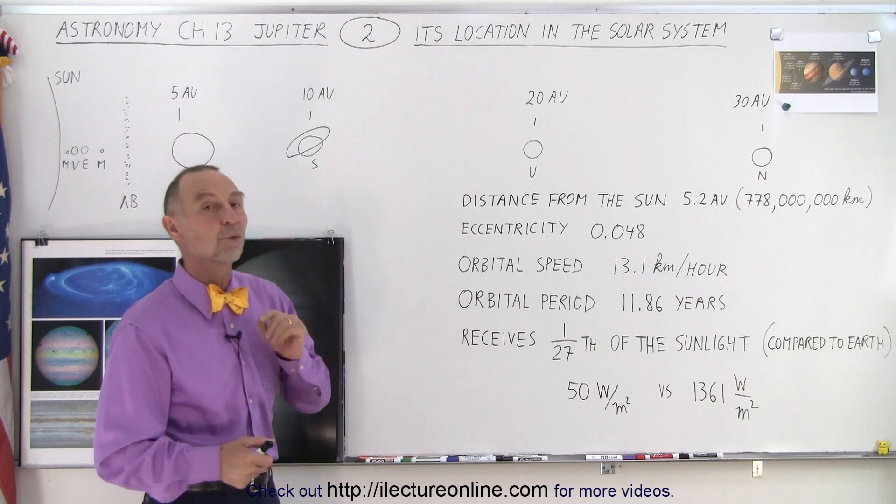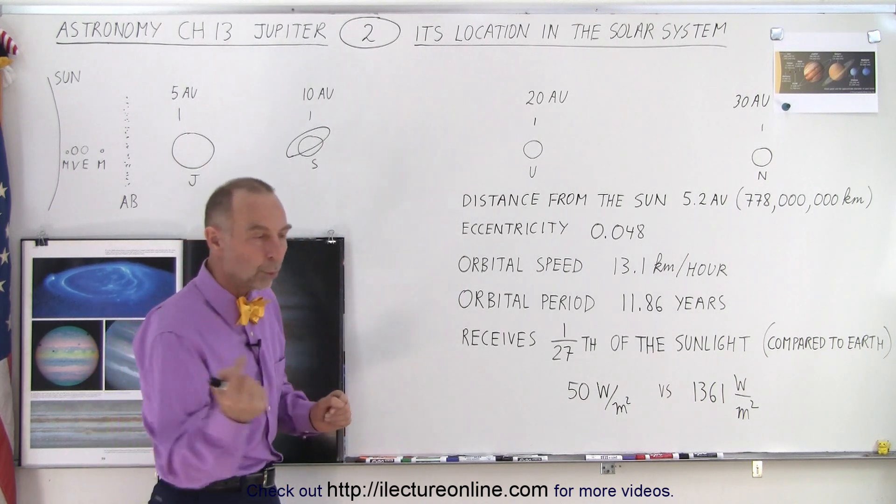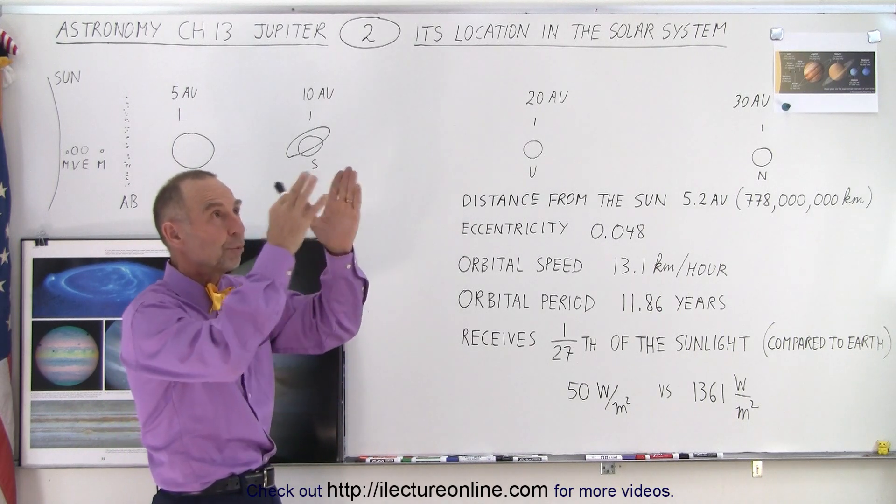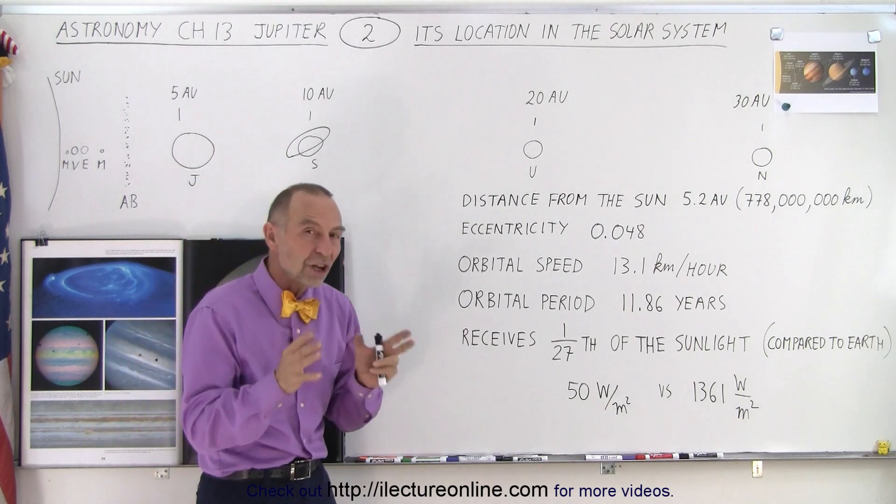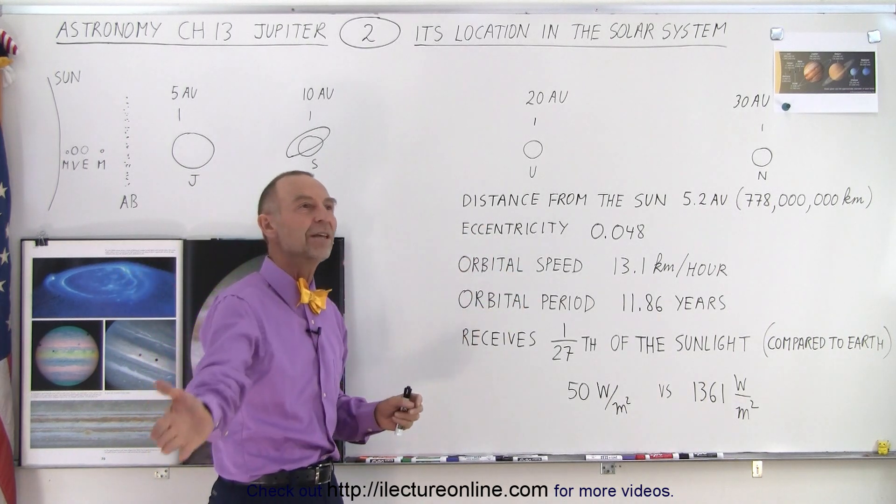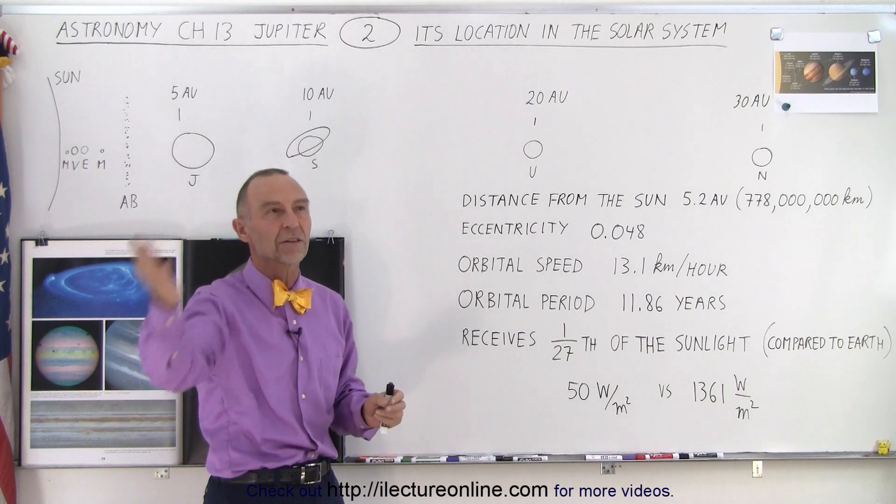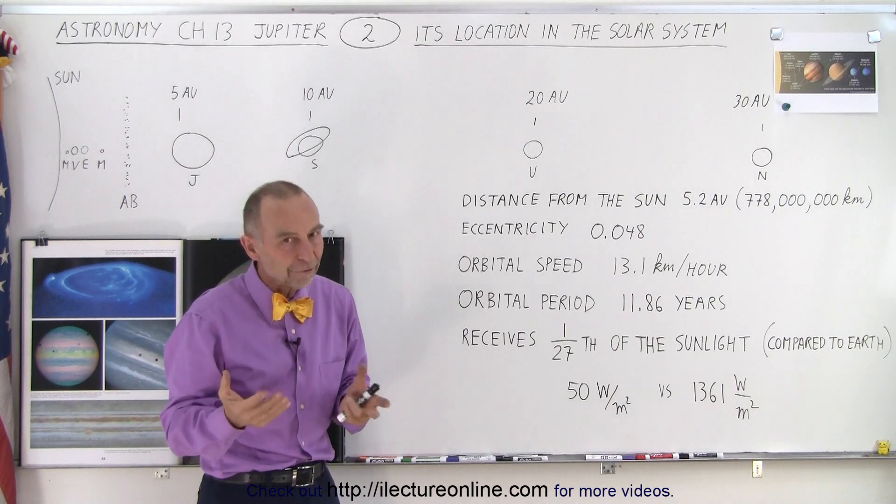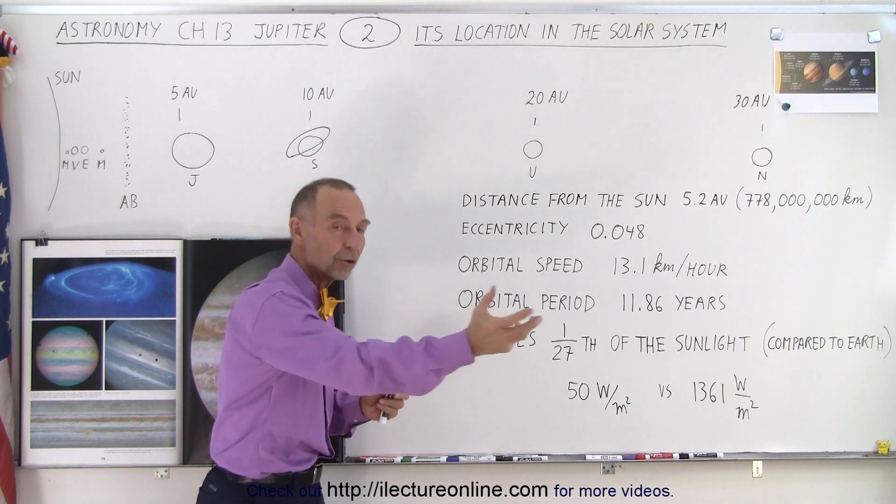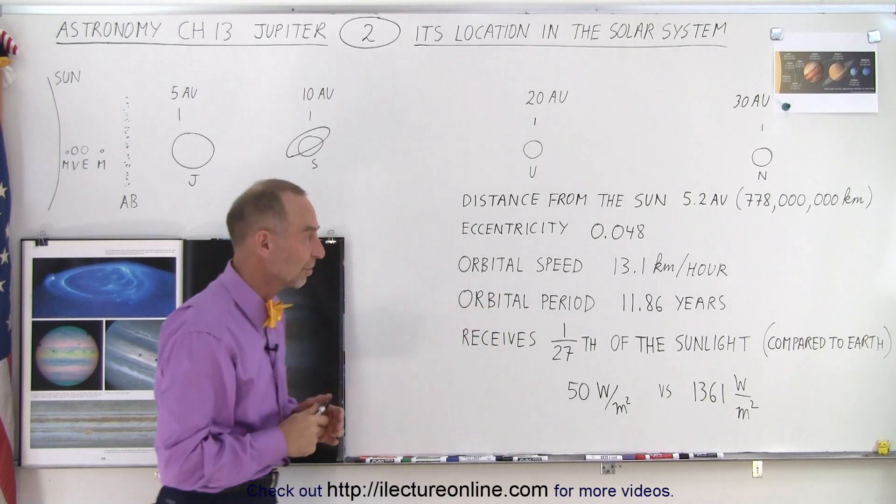So it takes almost 12 years for Jupiter to make one trip around the sun, which means that the position of Jupiter in the sky doesn't change that much relative to the other stars behind it. And so we see Jupiter move across the sky not that different from the stars as we go from month to month as the earth speeds around the sun much faster than Jupiter does.